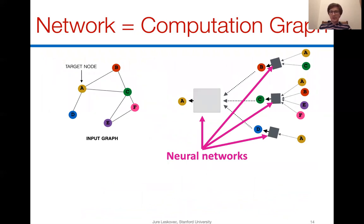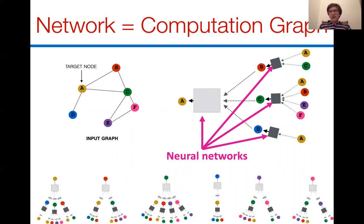Every node in the network creates its own neural network structure based on its neighborhood in the input graph. For example, node A has neighbors B, C, and D, so in the first layer of the graph neural network it collects information from B, C, and D. Node B has neighbors A and C, so it collects from them. What is novel is that every node defines its own network structure, meaning the network must learn how to process information from neighbors and neighbors-of-neighbors, as well as capture the local neighborhood structure around a given target node.